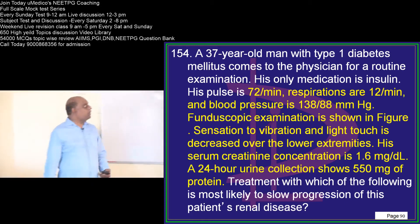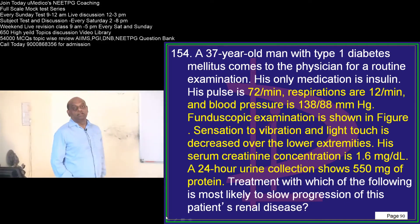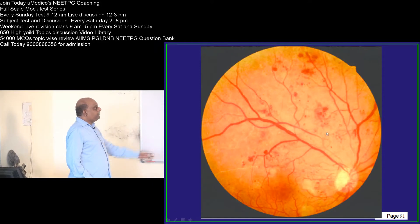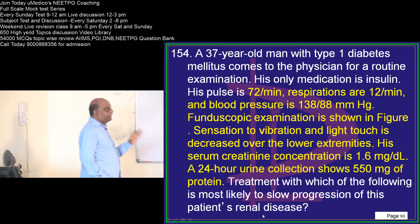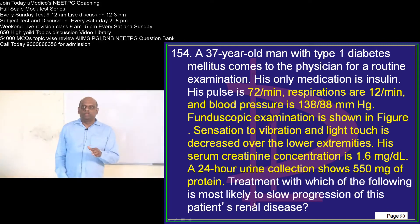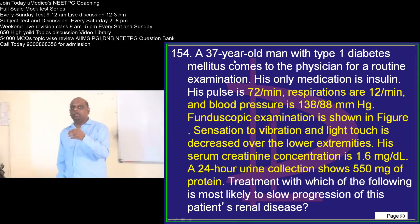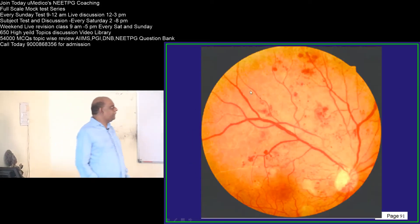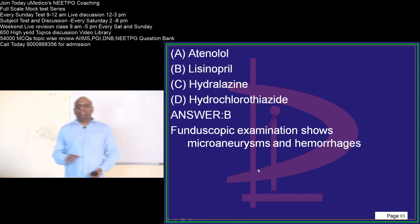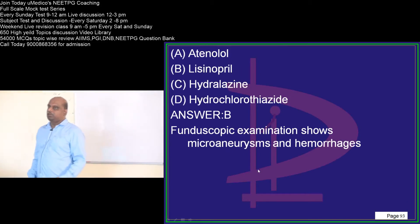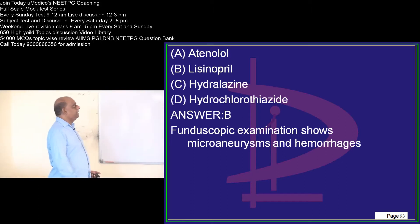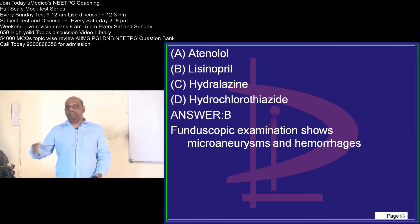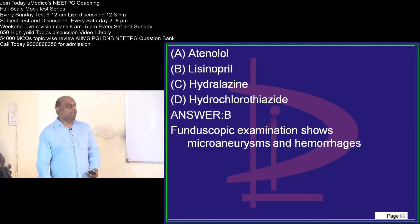A 37-year-old with Type 1 diabetes and fundoscopic examination showing microaneurysms and hemorrhages — which drug, if given to this patient, will slow down the worsening of renal disease? ACE inhibitors have that special advantage. If you administer lisinopril, the progression of renal disease is stopped. That is what you need to remember.